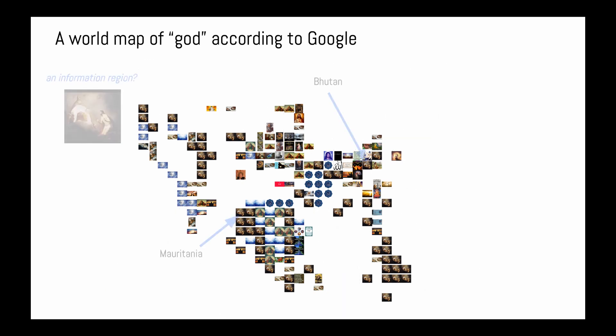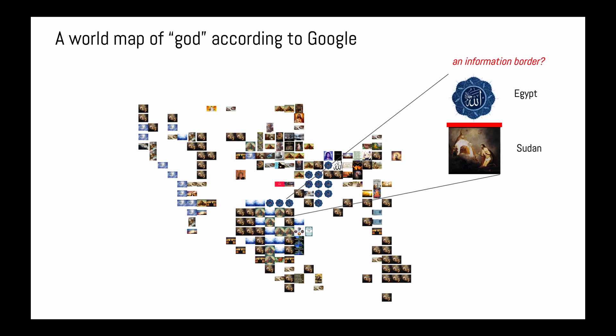For example, countries as far apart as Bhutan and Mauritania lie in the same information region. Searchers in both countries would find similar images of a Western God looking at a kneeling Jesus. On the other hand, countries as close as Egypt and Sudan lie in different information regions. Searchers in Sudan would find the same Christian image, whereas searchers in Egypt would find a calligraphic representation of Allah. Regardless of the underlying causes, there is some kind of information border between these regions. Such borders are shaped and reinforced by the search engine.